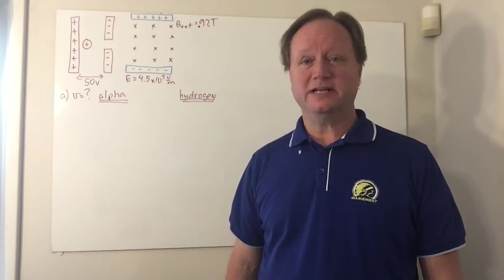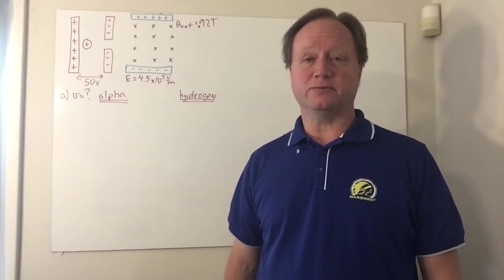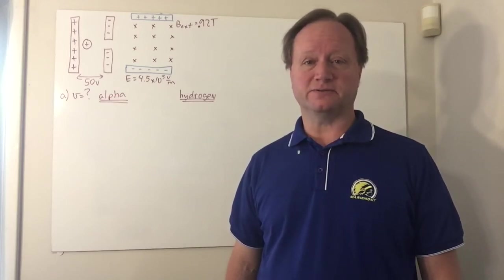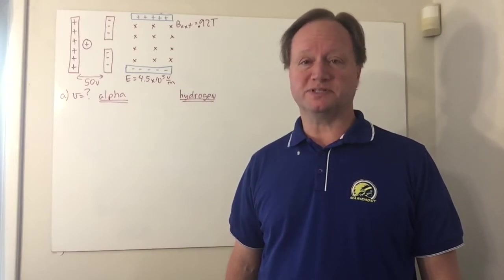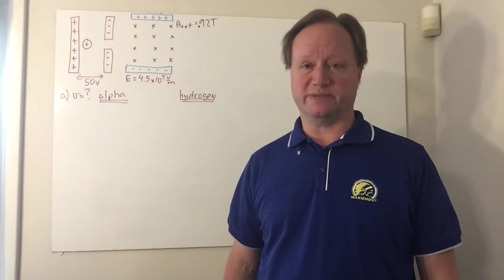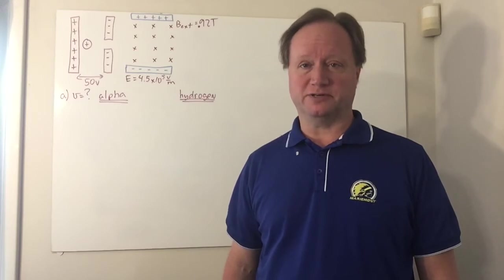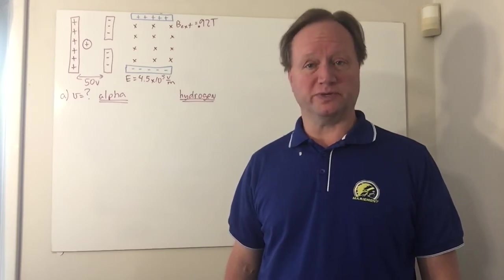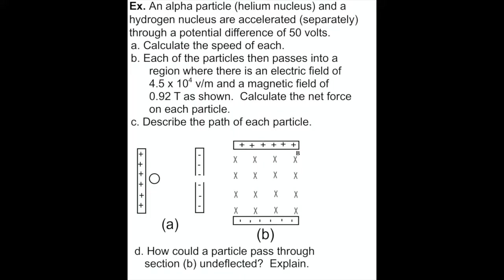Welcome back to AP Physics. The other day we introduced the basics of magnetic fields and magnetic forces. Today we're going to apply those to a specific technology called a mass spectrometer. So let's introduce this with a problem. An alpha particle, which is a helium nucleus, and a hydrogen nucleus are accelerated separately through a potential difference of 50 volts. We want to calculate the speed of each particle.